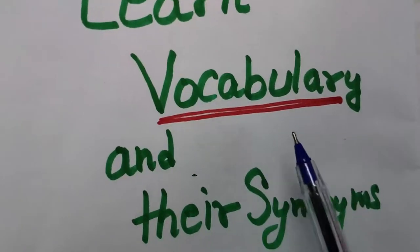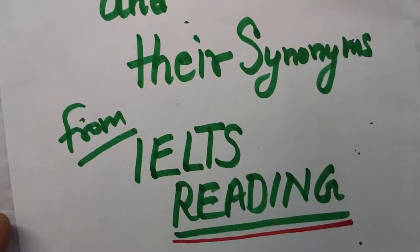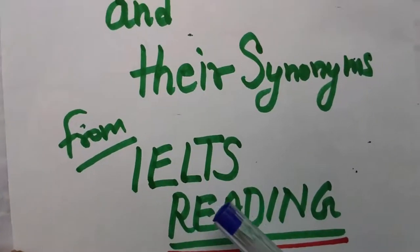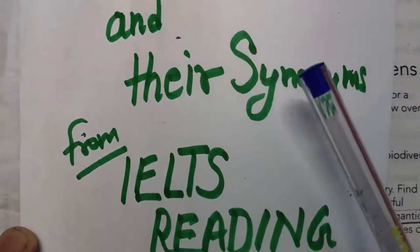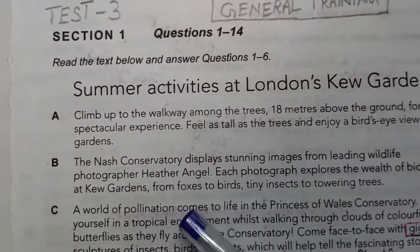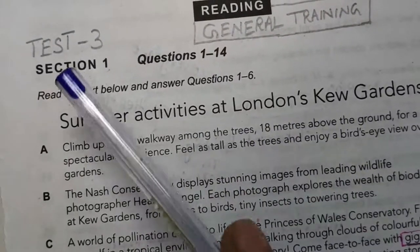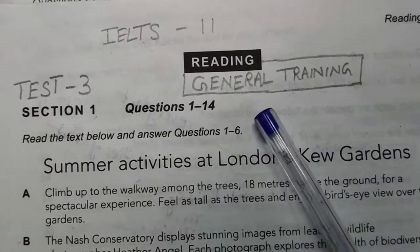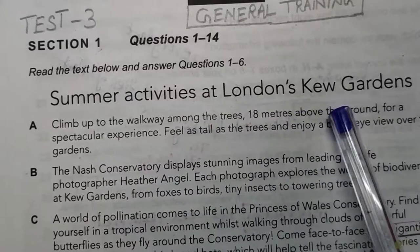Let's learn vocabulary words and their synonyms from the IELTS reading. Yes, this is absolutely true — we can learn so many vocabulary words from the IELTS reading. When we are doing IELTS reading, please concentrate on the vocabulary words. You will find their synonyms in the reading passage only. Let's start our video. This is Test 3 and I have taken this test from IELTS 11. This is GT reading — again, summer activities at London's Kew Gardens.